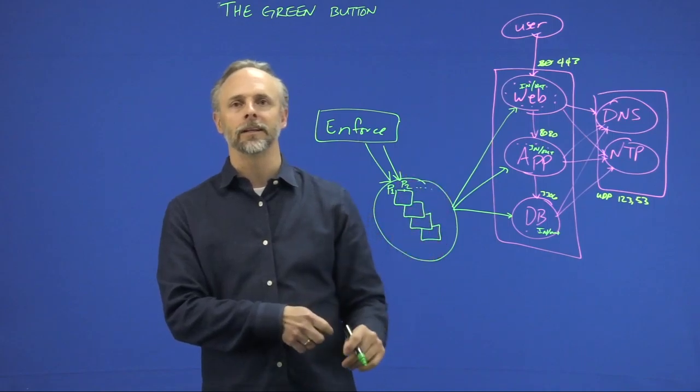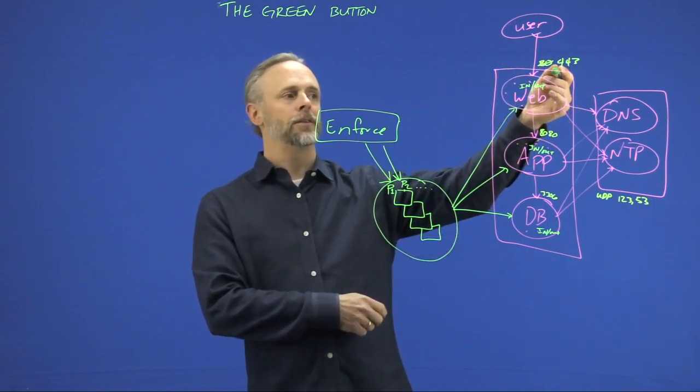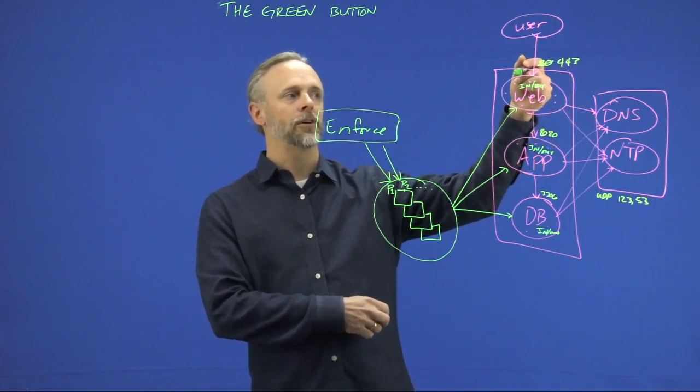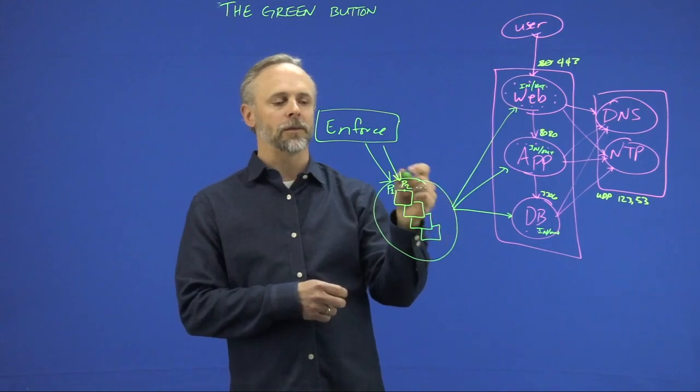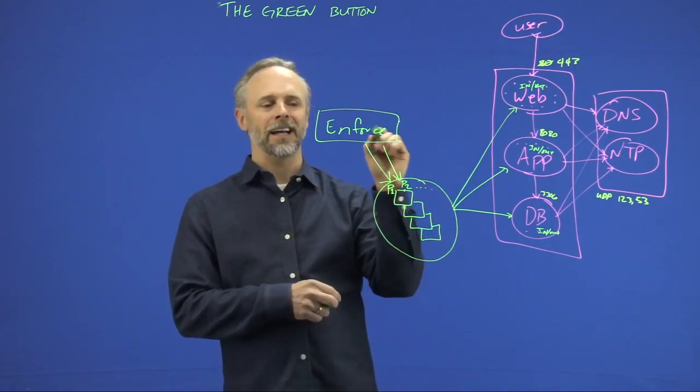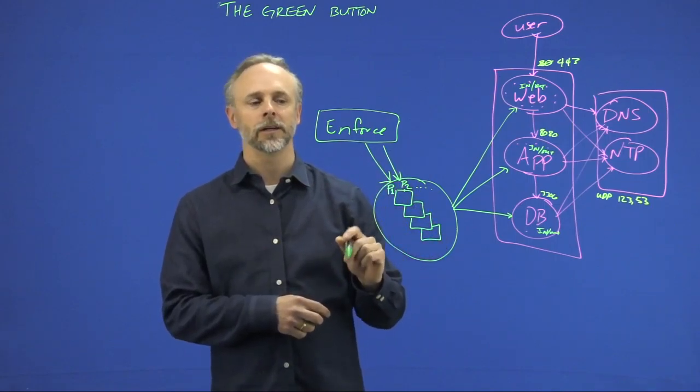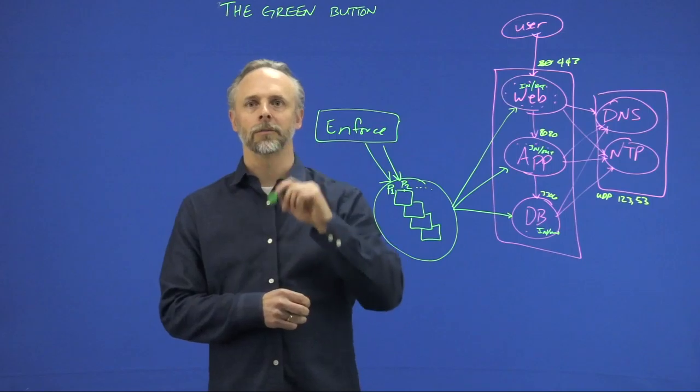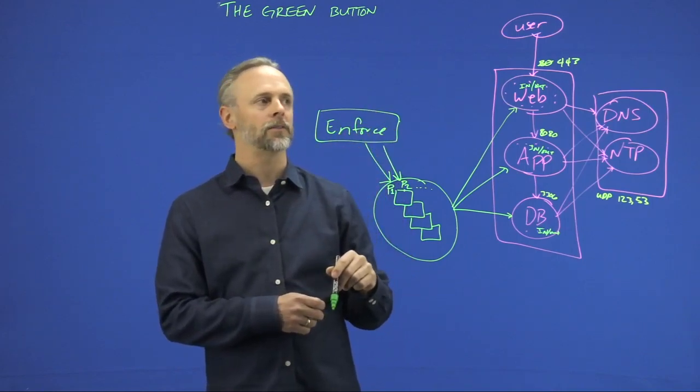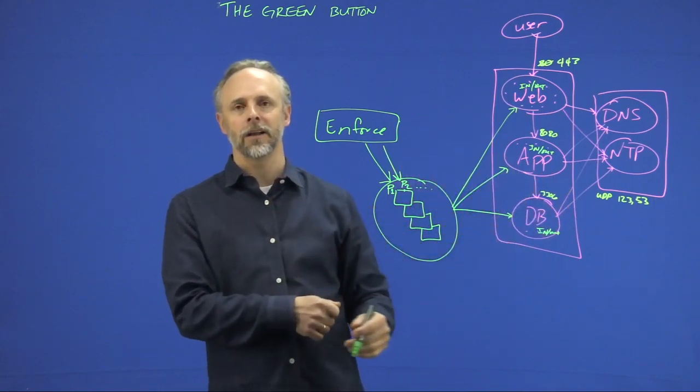So let's say that we went in and did that, but maybe we didn't properly configure the web servers with the right certificates. And so everything broke and the application stopped working. We could simply go in and say, okay, I don't want to enforce policy set two anymore. I'm going to roll it back to policy one. All I have to do is click on the policy version, go to policy one and say enforce this version of policy. So that allows us to manage temporal sets of policy over time.